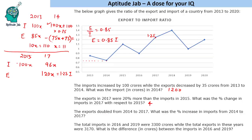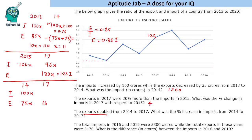Third question: exports doubled from 2014 to 2017. What was the percent increase in imports from 2014 to 2017? Let import in 2014 be 100x; with ratio 0.75, export in 2014 is 75x. Exports doubled, so exports in 2017 are 150x. The ratio in 2017 is 1.25, so 1.25 times imports in 2017 equals 150x, giving imports in 2017 as 120x. The percentage increase in imports is 20%.